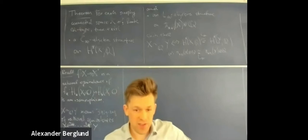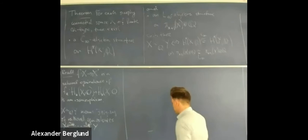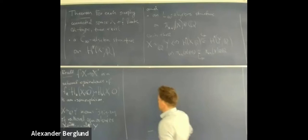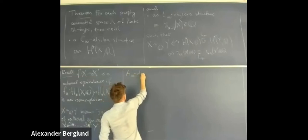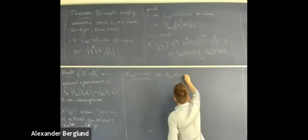I want to pick up where Ricardo left off. Let's review in a little more detail what these structures are from a classical point of view, and then I will connect it to the operadic point of view. Let's begin with C-infinity. But before I can define C-infinity algebras, I need to talk about A-infinity algebras.